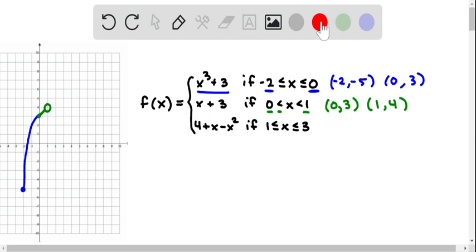Okay, moving on to the third piece. We're going to substitute 1 into the function and 3 into the function. So when we substitute 1 in, we have 4 plus 1 minus 1 squared, so that's just going to be 4. And then when we substitute 3 in, we have 4 plus 3, which is 7, minus 9, so negative 2. And because these are both less than or equal to signs, these would both be closed circles.